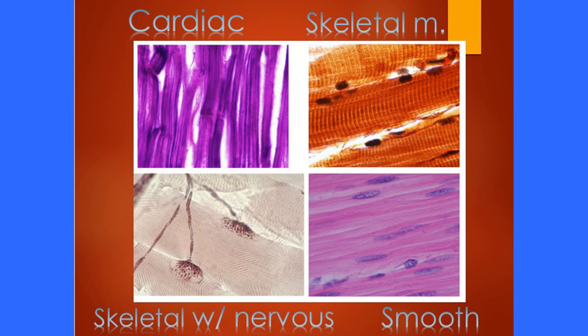Skeletal muscle is very fast to contract but also very fast to fatigue, and it's voluntary — you have control over it. Cardiac muscle you would not have control over. The nerves attach to the muscles, allowing voluntary control. In the bottom left picture, the lines that look like stems of a flower are actually the nerve itself, known as your motor nerve axon.